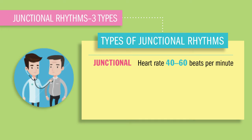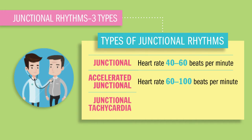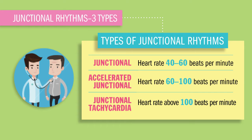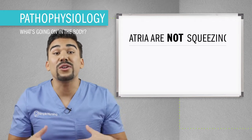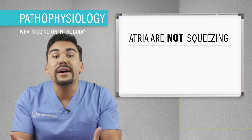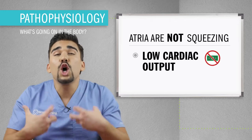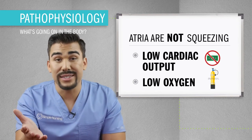Our two other types of junctional rhythms only vary in their rate. We have accelerated junctional with a rate of 60 to 100, and then junctional tachycardia with a rate over 100 beats per minute. Basically the atriums are being skipped — they're not squeezing out that oxygen-rich blood to the body — meaning low cardiac output, basically low oxygen to the body.